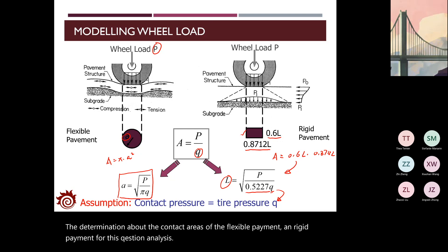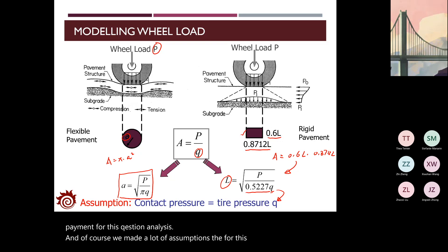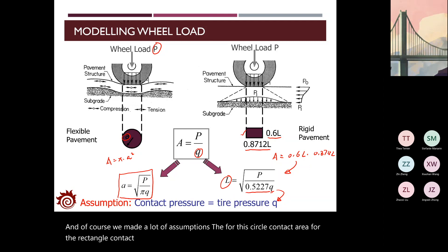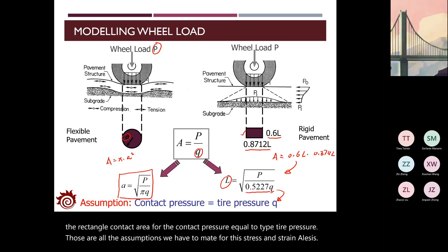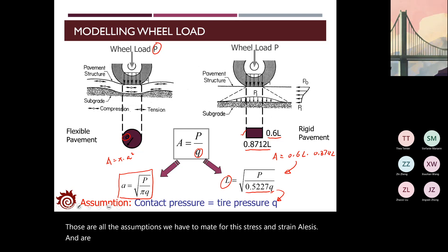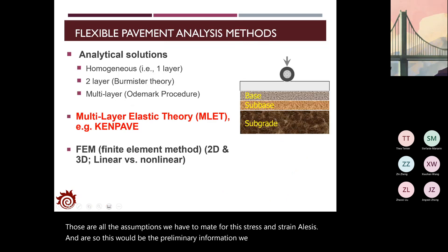We made several assumptions: circular contact area for flexible pavement, rectangular for rigid pavement, and contact pressure equal to tire pressure. These are all the assumptions we must make for the stress and strain analysis.